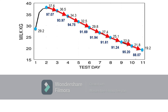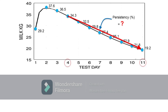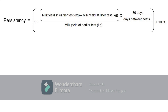The same method of calculation is applied if we want to determine other persistencies with days between tests of 30 days. However, when tests are not exactly 30 days apart — between test day 4 and test day 11 as shown here — the calculation would be different. Persistency is calculated as: 30 days divided by the number of days between tests, multiplied by the difference between milk yield at the earlier test and milk yield at the later test, divided by the milk yield at the earlier test, subtracted from 1, and finally multiplied by 100%. Using this formula, it is possible to calculate persistencies between any two points in the lactation curve.